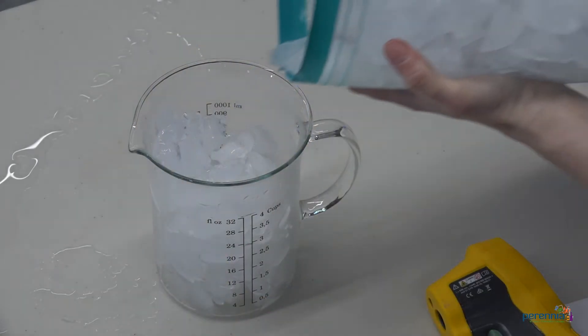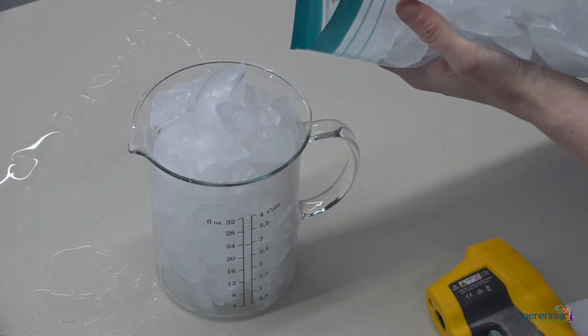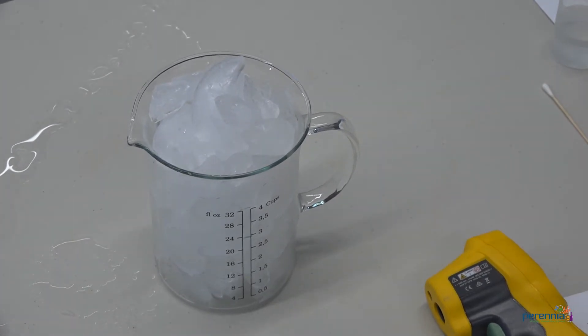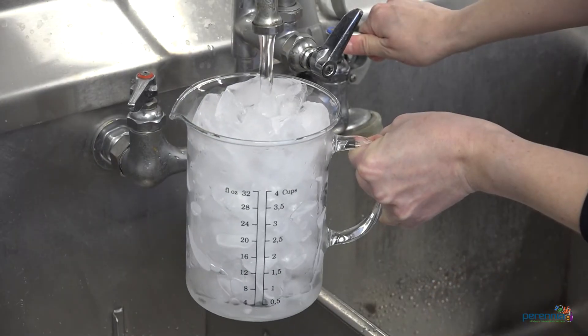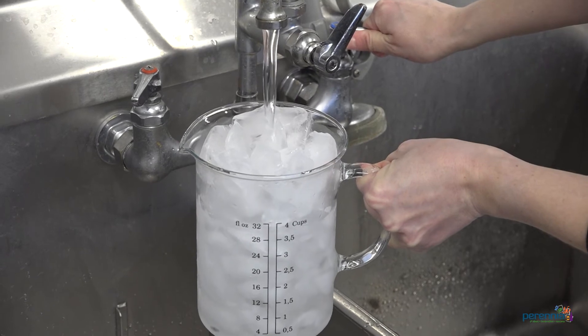Step six, fill a large glass or container to the very top with ice. Crushed ice is preferred but not required. Step seven, add very cold water until the water reaches about one half inch below the top of the ice.